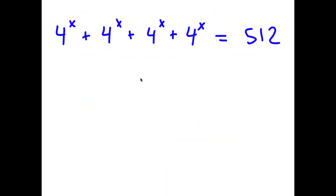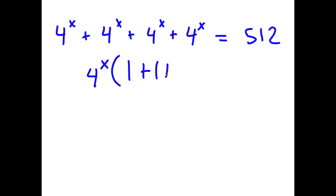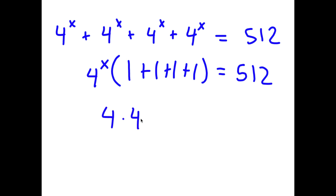In this problem I have 4^x + 4^x + 4^x + 4^x equals 512. I'm going to factor out 4^x, so I get 4^x times (1 + 1 + 1 + 1) equals 512, which simplifies to 4 times 4^x equals 512.